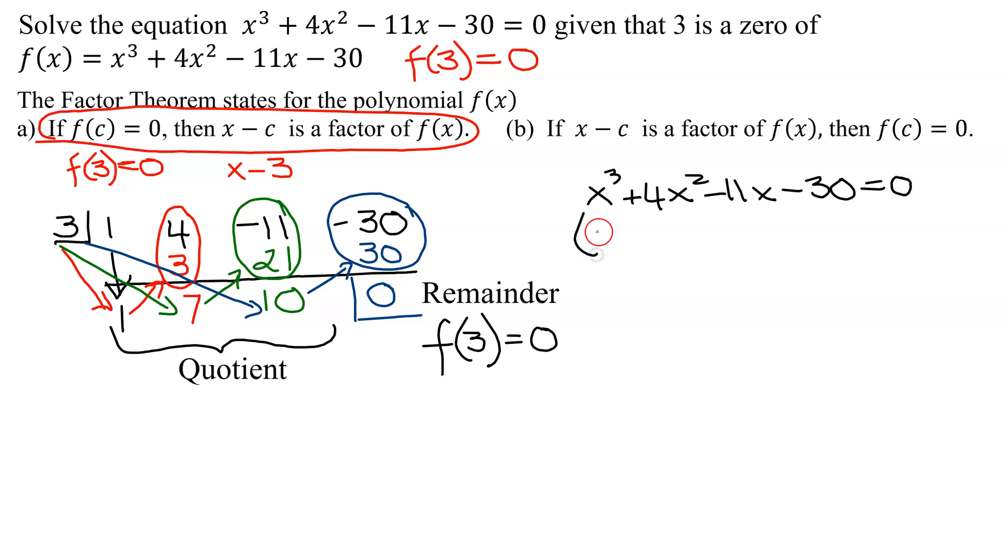And remember, this came from a degree 3 term. This in the quotient is going to have 1 degree less than up here.